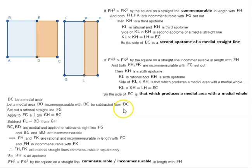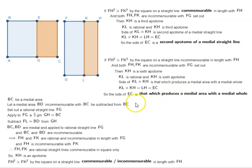So that is what we had to prove: that if a medial area is subtracted from a medial area and these areas are incommensurable, then either a second apotome of a medial straight line arises, or that which produces a medial area with a medial hole arises. That is Proposition 110 of Book 10 of Euclid's Elements.